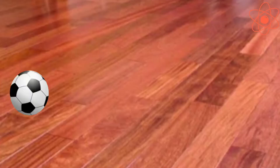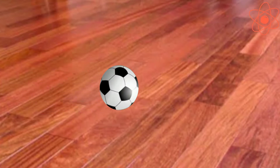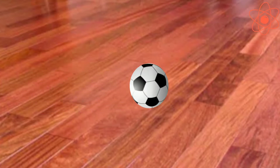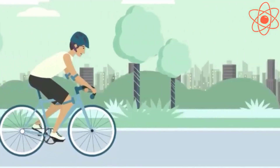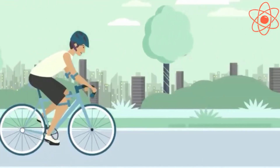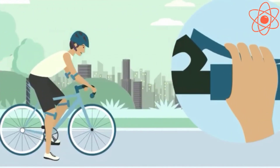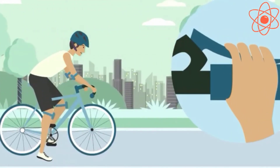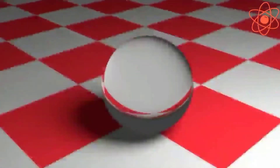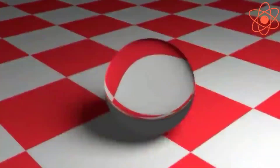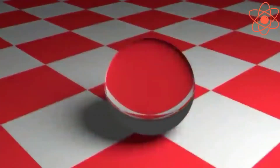Take a ball and roll it on the floor. You will notice that it rolls for some time and then stops. Similarly, if you stop paddling a bicycle it slows down and ultimately stops. What makes moving things come to a stop?